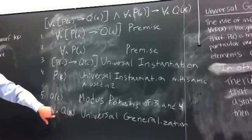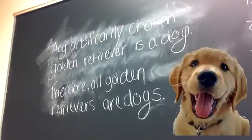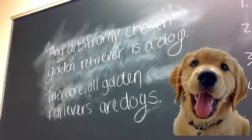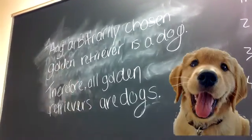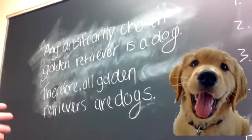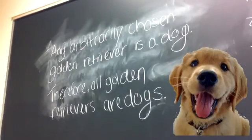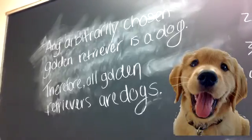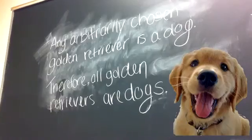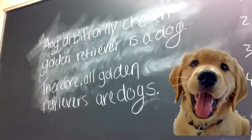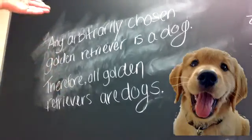Therefore, for all elements in the domain, q of x is true. If that discrete mathematical proof did not make you understand the concept, we also have this modern-day English proof, which is pretty self-explanatory. It states that any arbitrarily chosen golden retriever is a dog. Therefore, all golden retrievers are dogs. You can see how the principle of universal generalization can be applied to prove that the second statement is true from the first.